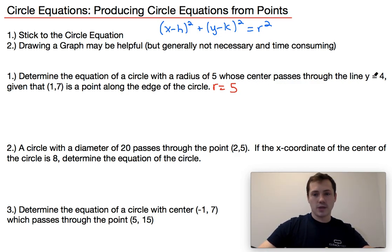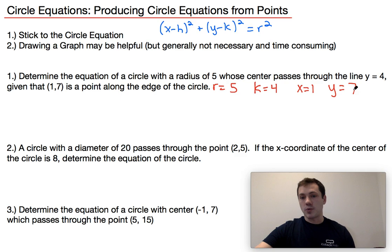The center passes through the line y equals 4. That means that our k value is going to be 4 and x would equal 1 and y would equal 7 because x and y represent points on the edge of the circle. 1 comma 7, x comma y, x equals 1, y equals 7.